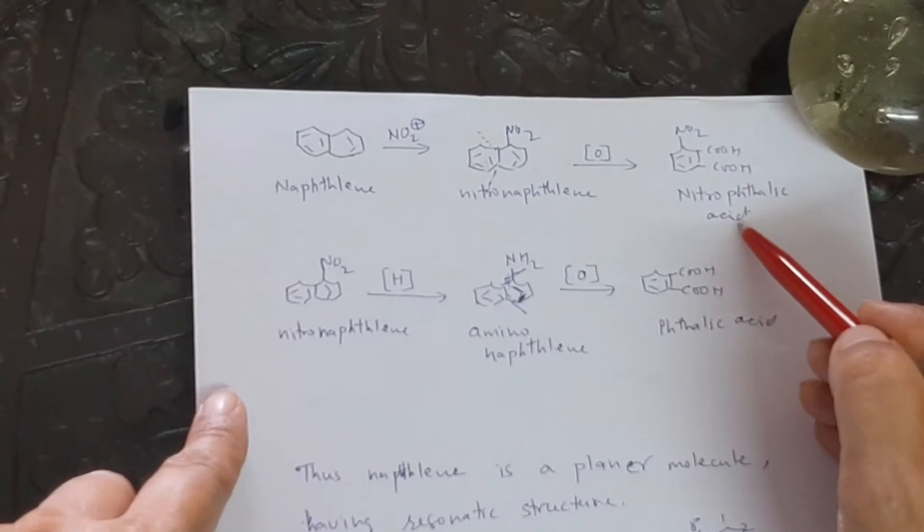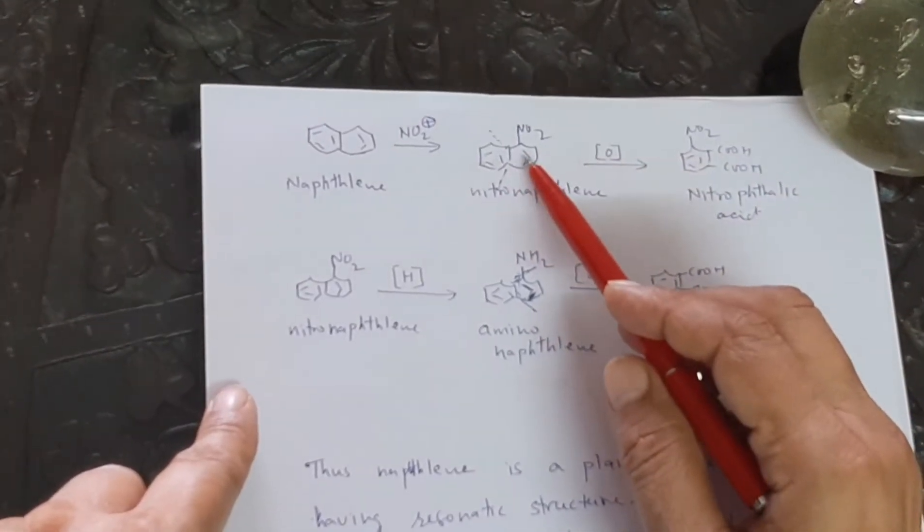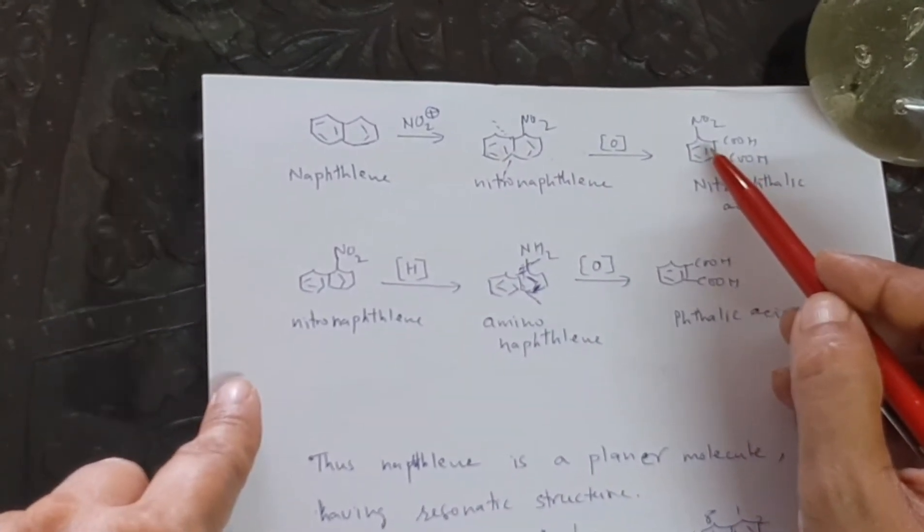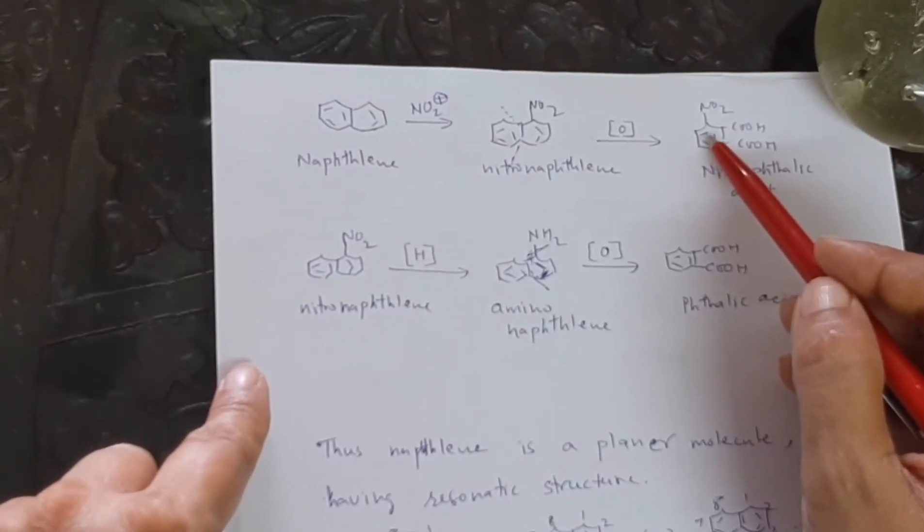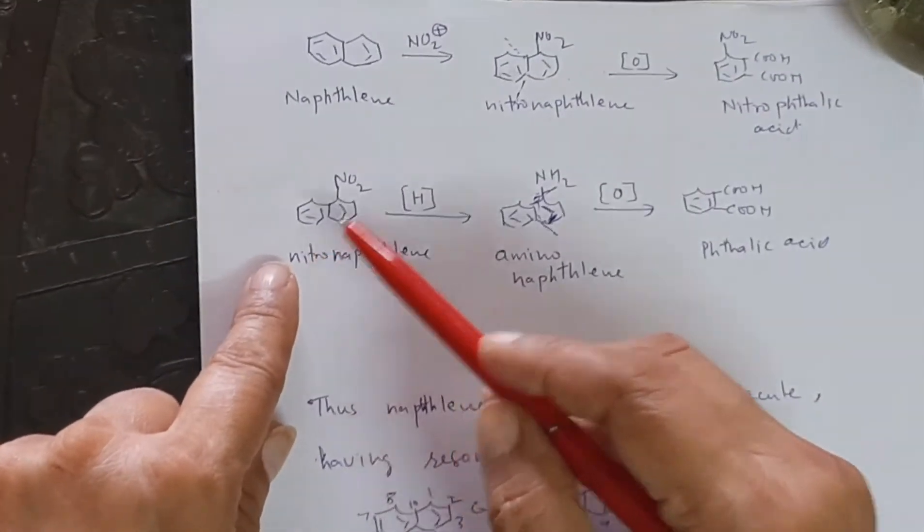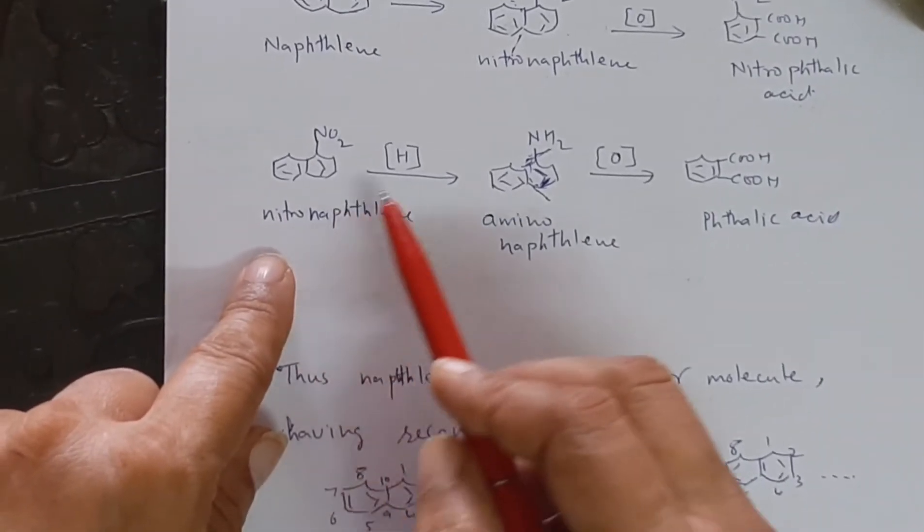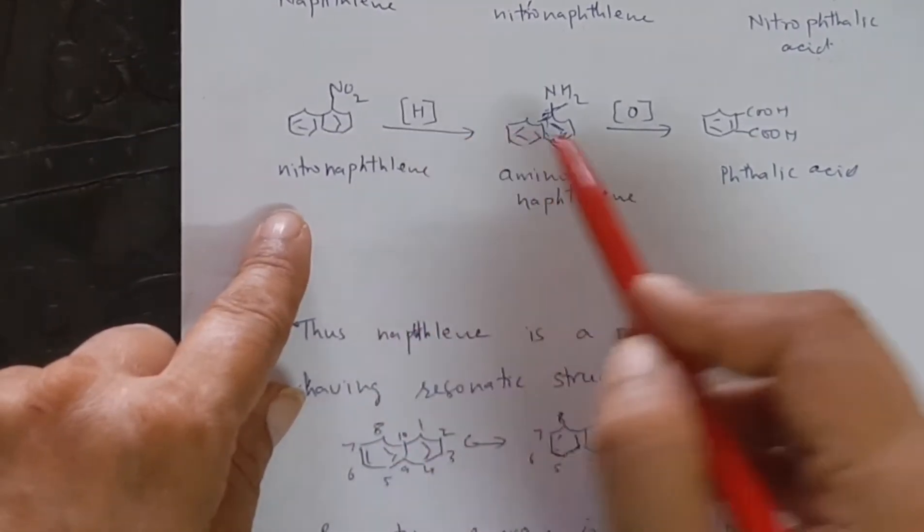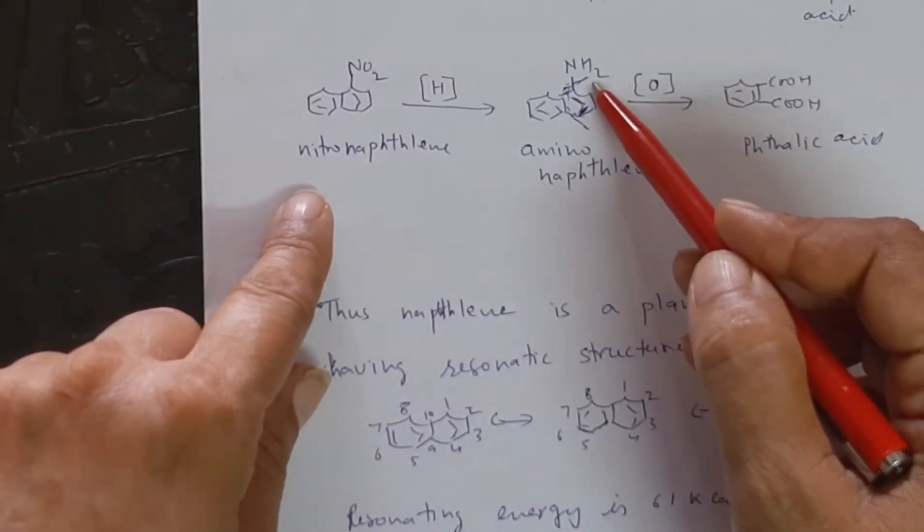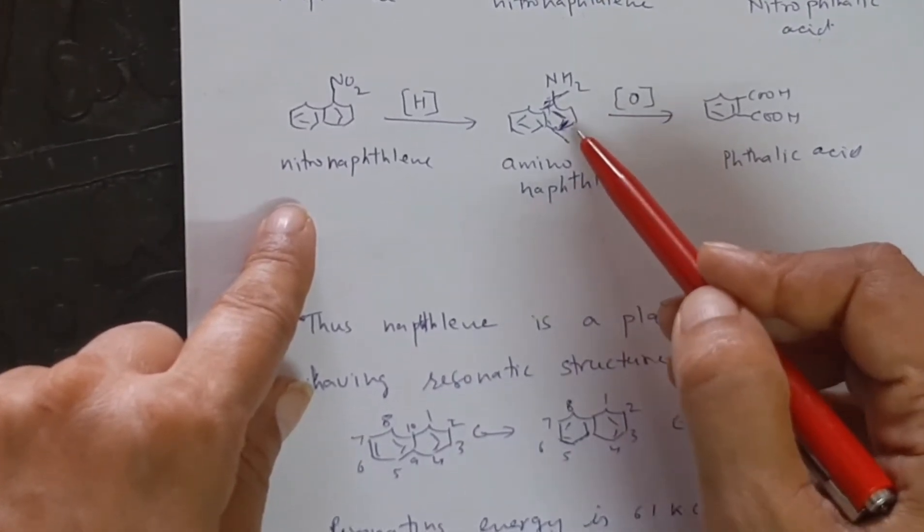The formation of nitrophthalic acid shows that the benzene ring on which nitro group is present is aromatic. So if this ring is aromatic, then whether another ring is aromatic or not, to say it again, we take this nitronaphthalene. First, we reduce it to aminonaphthalene. Now, we know the amino group activates the benzene ring.